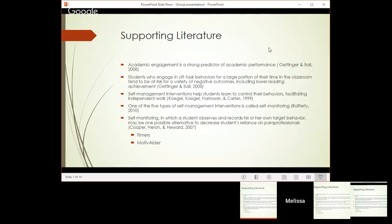So one way to assist students in remaining on task is to use self-management interventions. And according to a study done by Kojol, Harrower, and Carter in 1999, self-management interventions help students learn to control their behaviors, which would then facilitate independent work. So according to Rafferty in 2010, there are five different types of self-management interventions. One, self-evaluation. Two, goal setting. Three, self-instruction. Four, strategy instruction. And then the last being self-monitoring, which is what we use for our study.